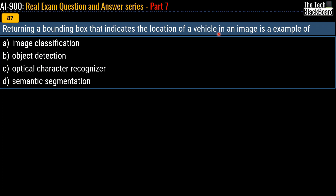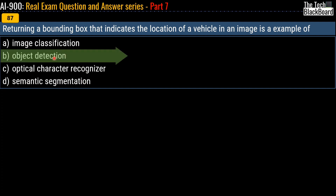Question 87: returning a bounding box that indicates the location of a vehicle in an image — is this an example of image classification, object detection, optical character recognition, or semantic segmentation? The correct answer is obviously option B, object detection.